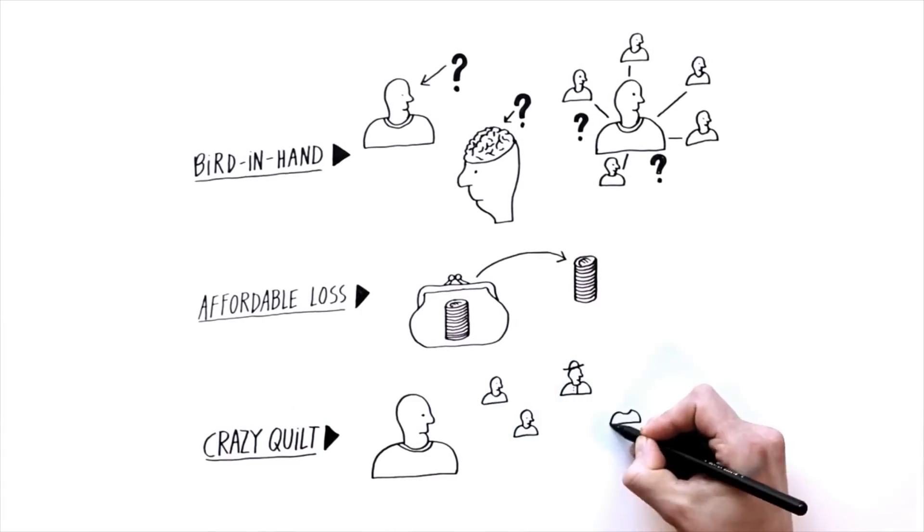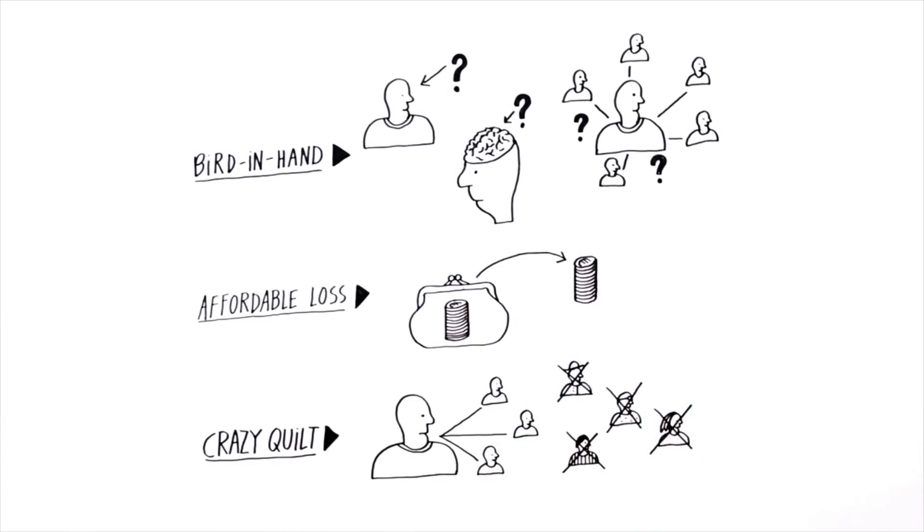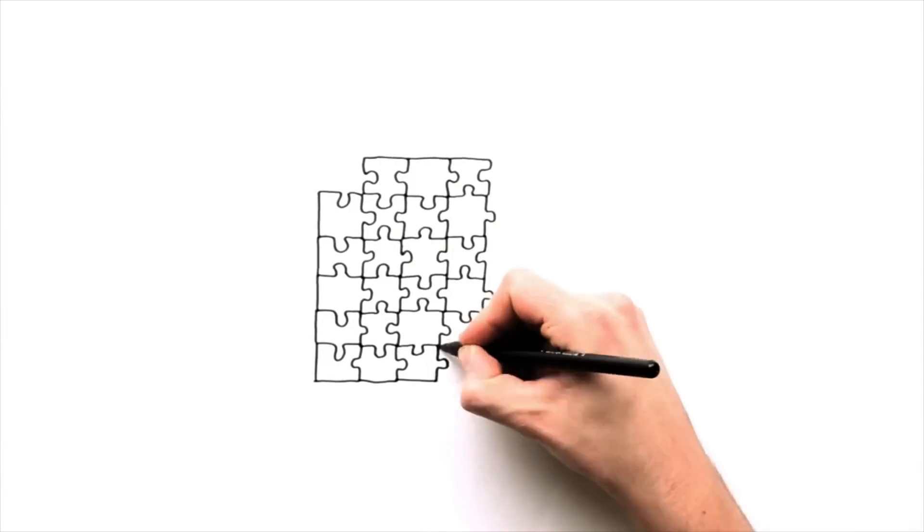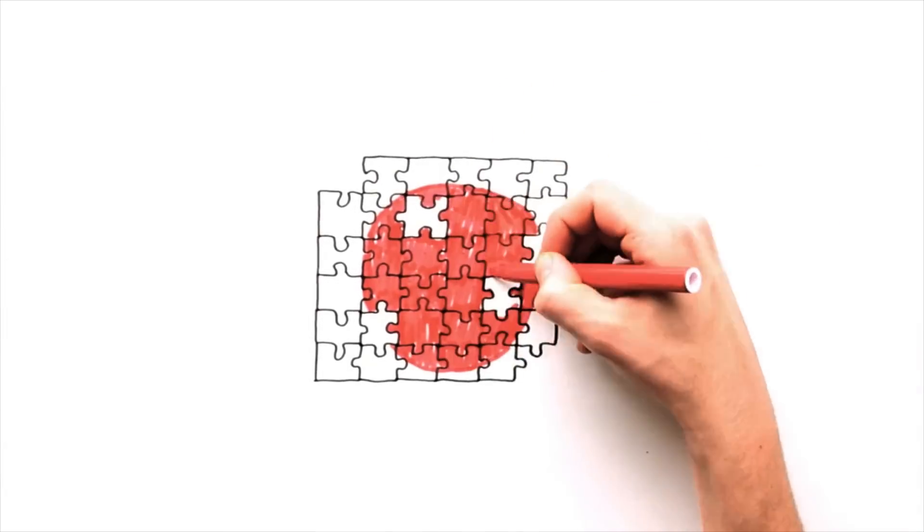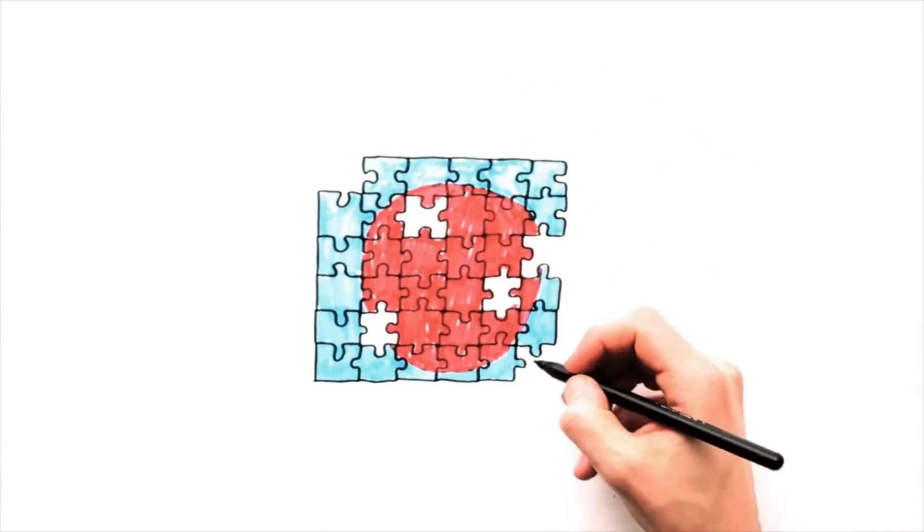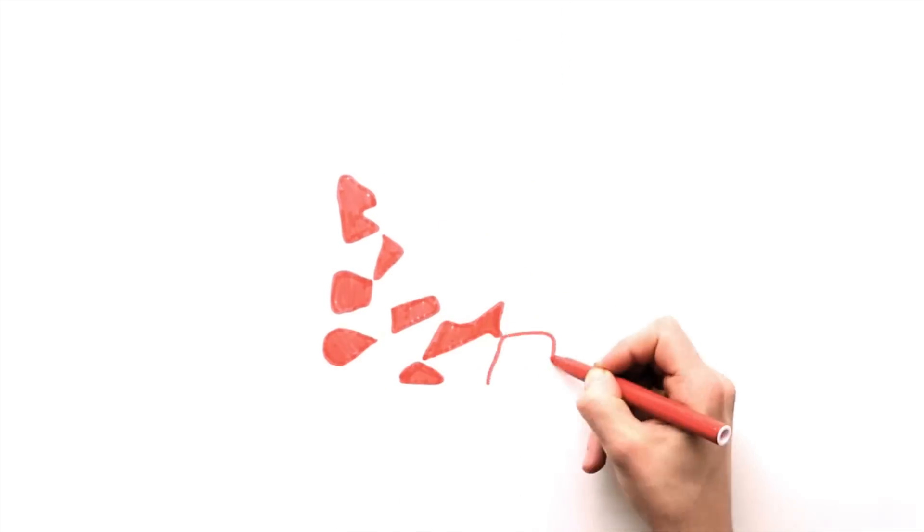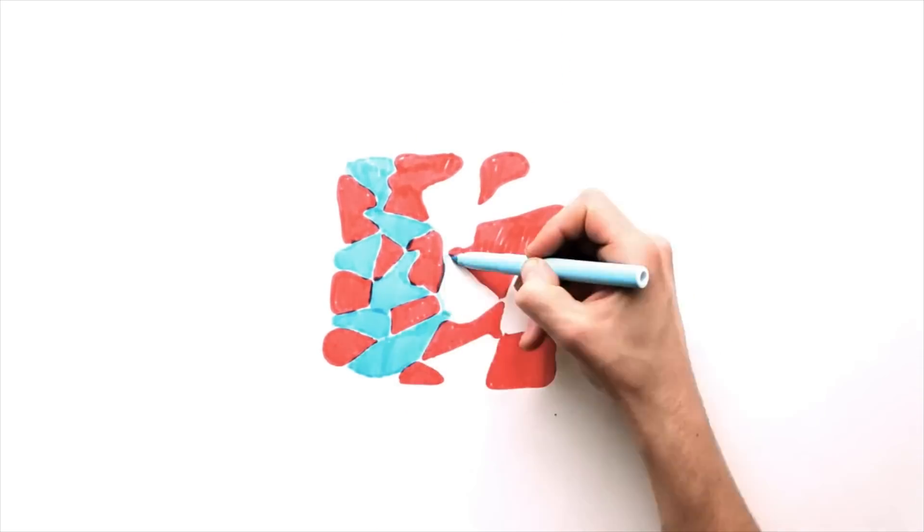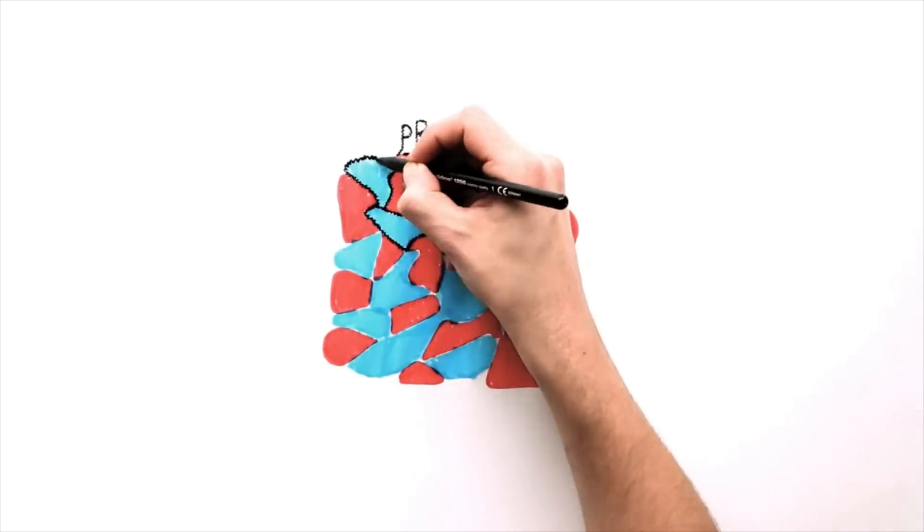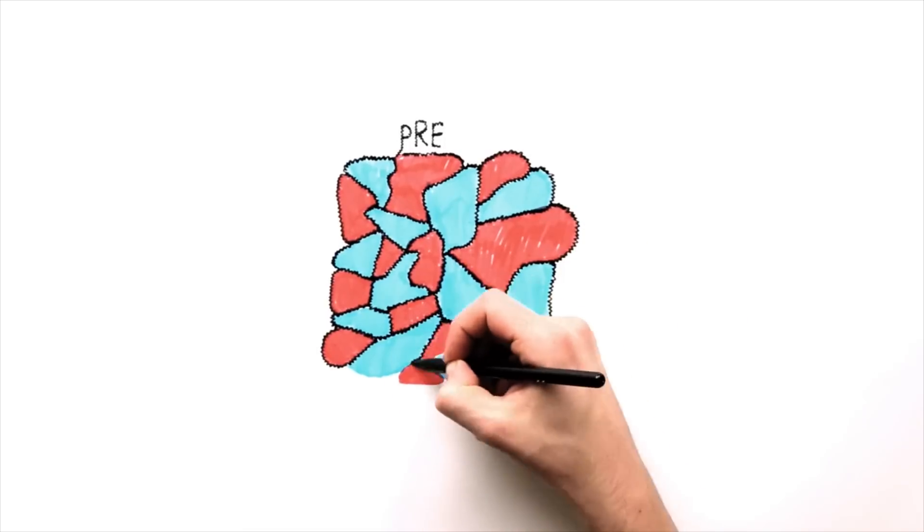Crazy quilt. Co-creation with self-selected stakeholders. We are taught entrepreneurs are brilliant in solving puzzles. How can I beat my competitors? How do I best position myself in the market? Entrepreneurs, however, don't puzzle. They co-create with stakeholders they trust, who are willing to pre-commit themselves.